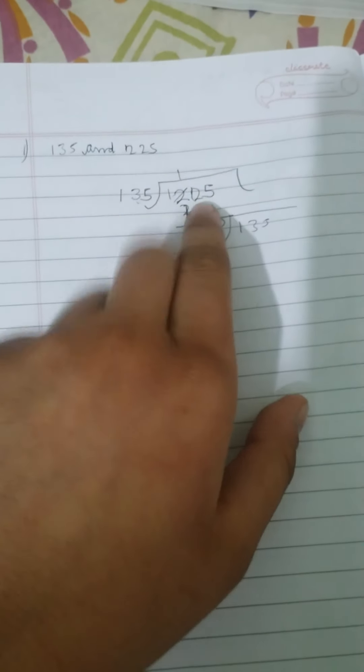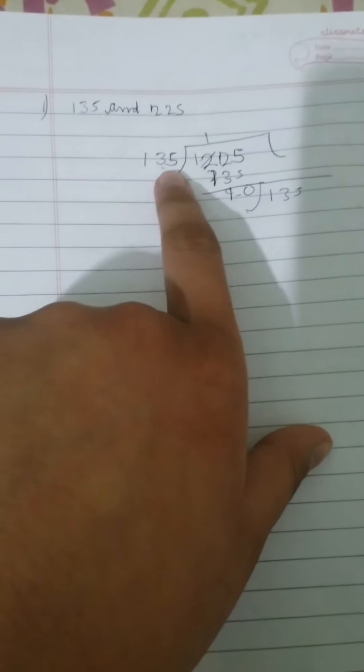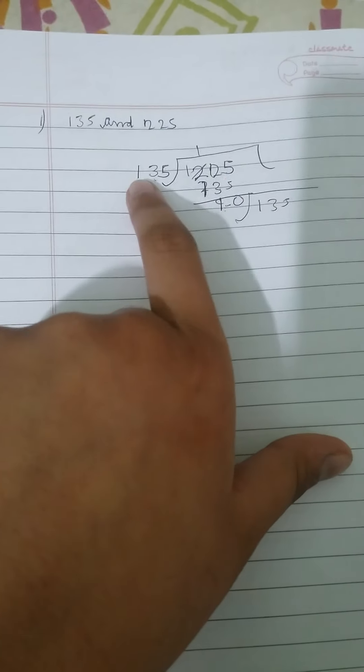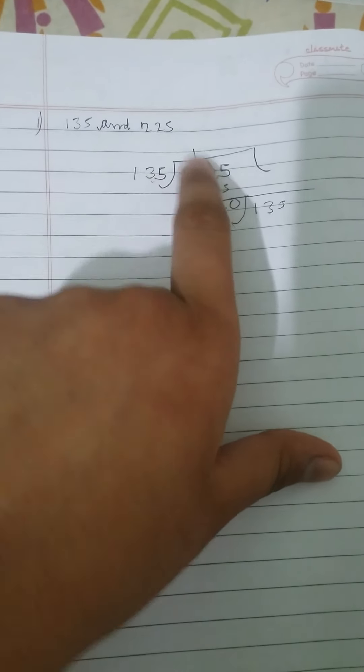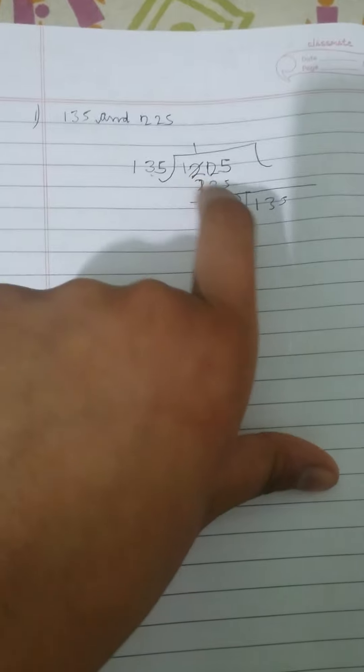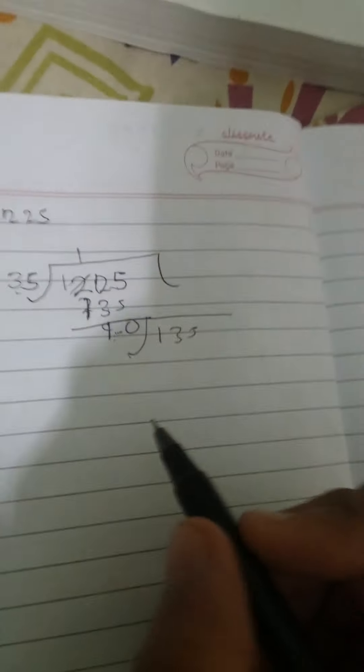The bigger term will be the dividend and the smaller term will be the divisor. So 225 divided by 135. 135 once is 135, subtract to get 90 as remainder.